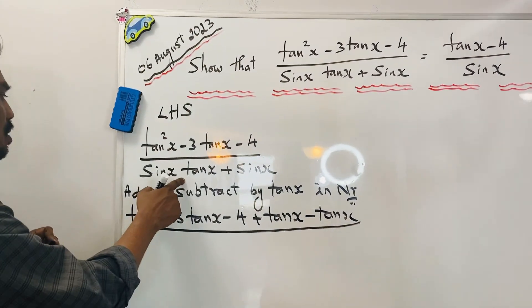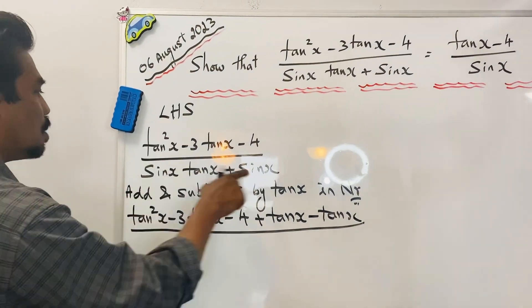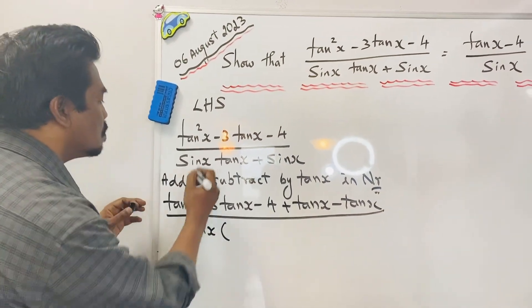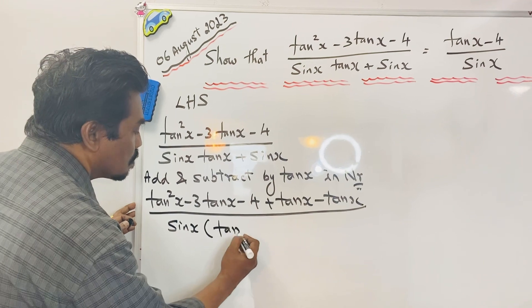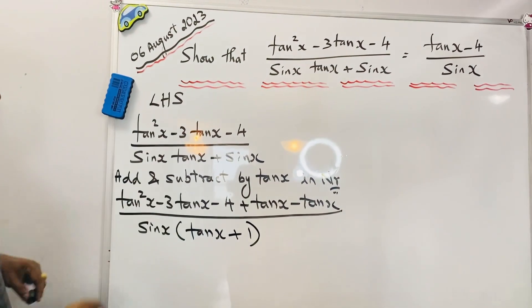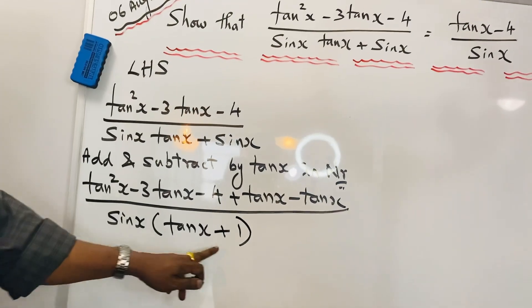When we are adding and subtracting tanx in the numerator, what will happen to the numerator? Tan²x - 3tanx - 4 + tanx - tanx. Here I can factor it now itself. We can see sinx available here, sinx available. I can take sinx outside. So what will be inside? Tanx + 1. Now seeing this time, you may have some idea. We need a tanx + 1.